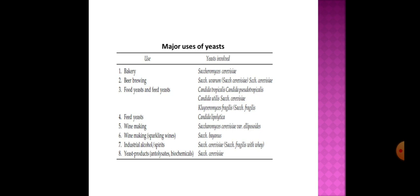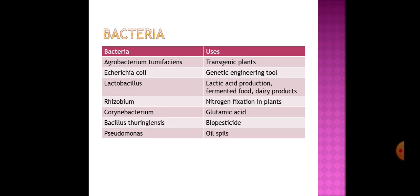Moving on to bacteria: Agrobacterium tumefaciens is used for production of transgenic plants. Acetobacter is used as a genetic tool, while Lactobacillus is used in production of lactic acid and many fermented foods. Rhizobium is used for nitrogen fixation in plants. Corynebacterium glutamicum is used in production of the amino acid glutamic acid. Bacillus thuringiensis is used as a biopesticide — today we have Bt cotton and Bt brinjal. Pseudomonas putida is used to treat oil spills in oceans and seas.